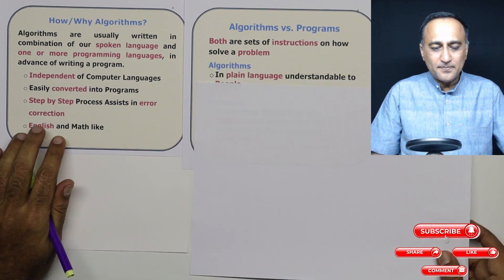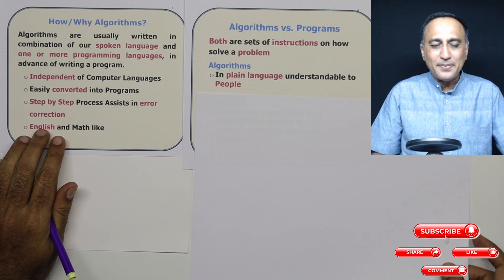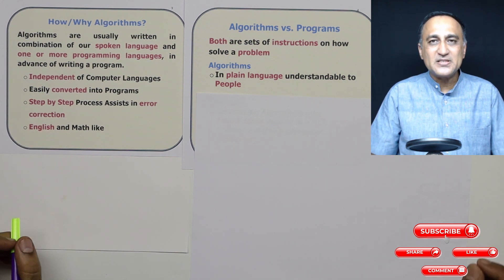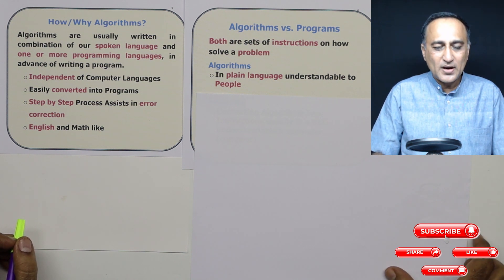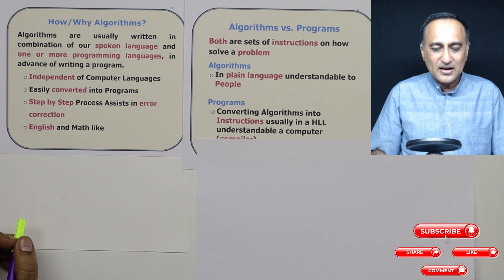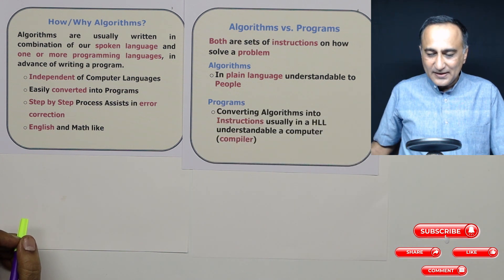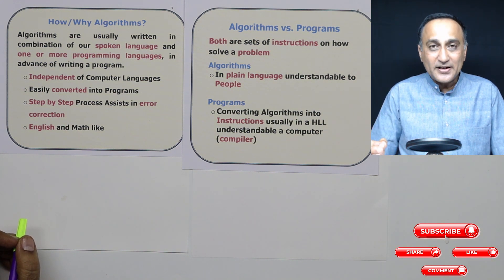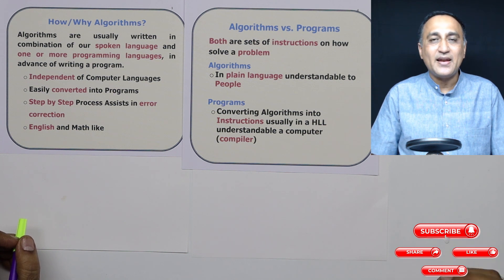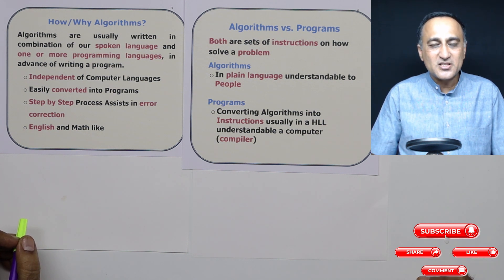If you look at algorithm, algorithm is written in a plain general purpose language so that it is understandable to people as to how you are solving a problem. Whereas programs usually take an algorithm and convert it into instructions, using a high-level language, so that those instructions make sense to the compiler of that particular language.